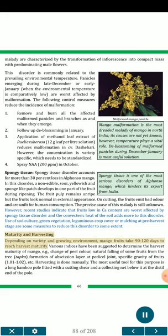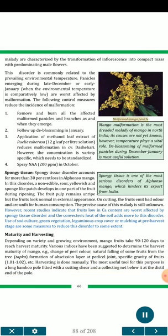Maturity and Harvesting: Depending on variety and growing environment, mango fruits take 90 to 120 days to reach harvest maturity. Various indices have been suggested to determine harvest maturity: change of peel color, natural falling of some fruits from the tree (tapka), formation of abscission layer at pedicel joint, specific gravity of fruits (1.01–1.02), etc. Harvesting is done manually. The most useful tool is a long bamboo pole fitted with a cutting shear and a collecting net below it. Mango malformation is the most dreaded malady in North India; temperature plays a vital role, and deblossoming of malformed panicles during December–January is the most useful solution. Spongy tissue is one of the most serious disorders of Alphonso mango, which hinders its export from India.